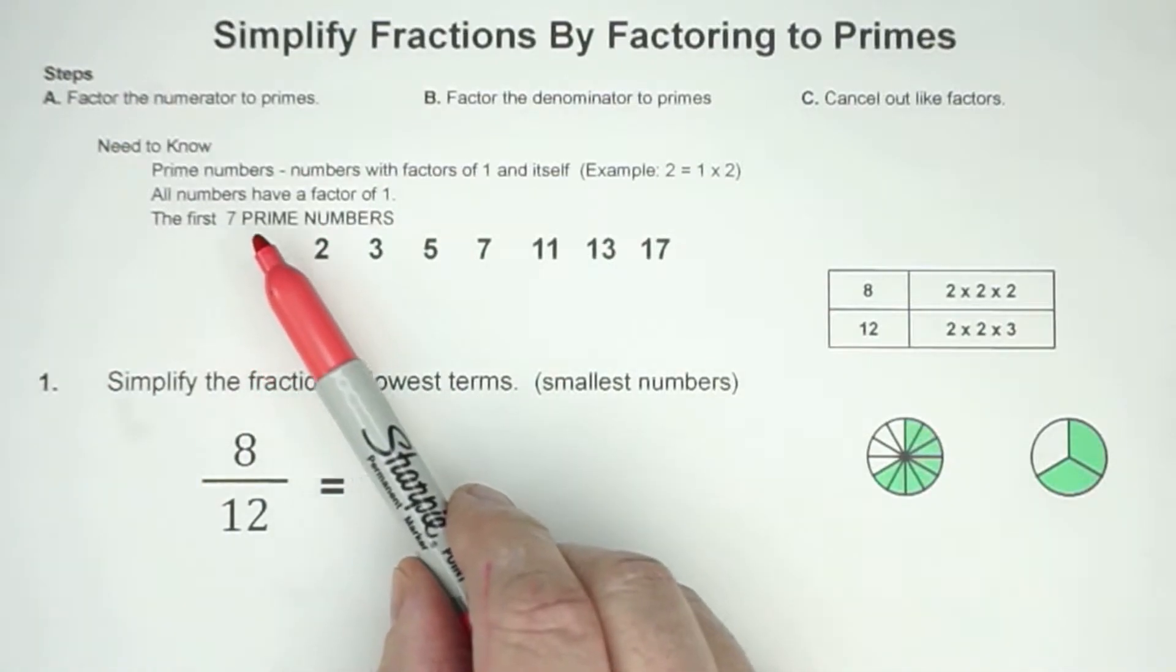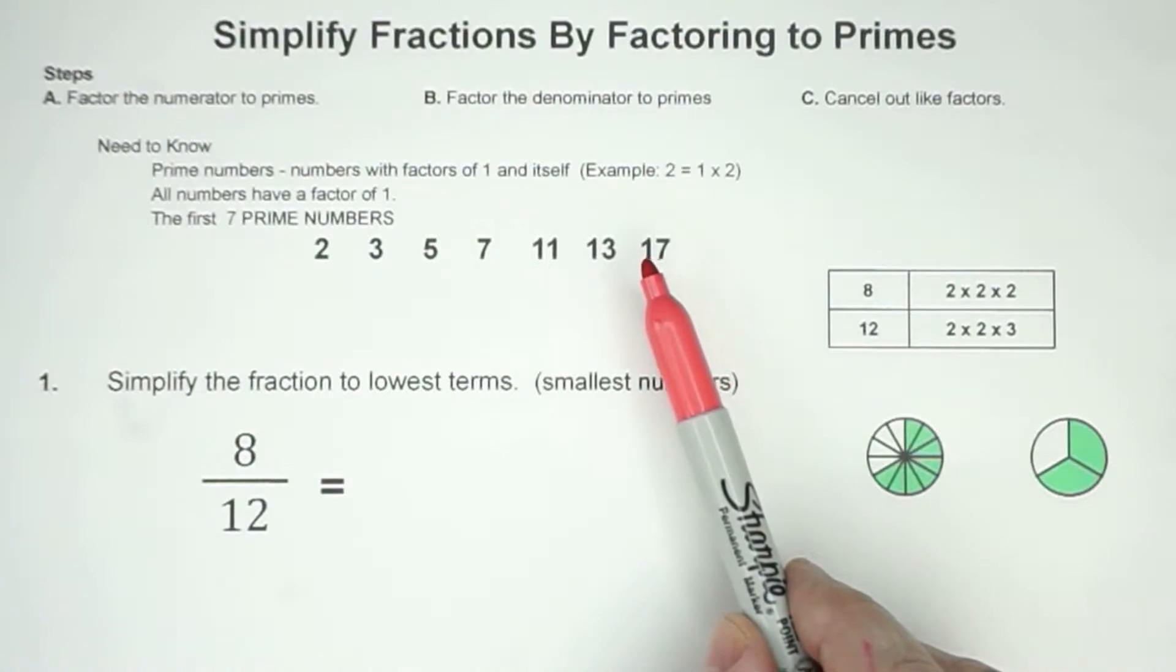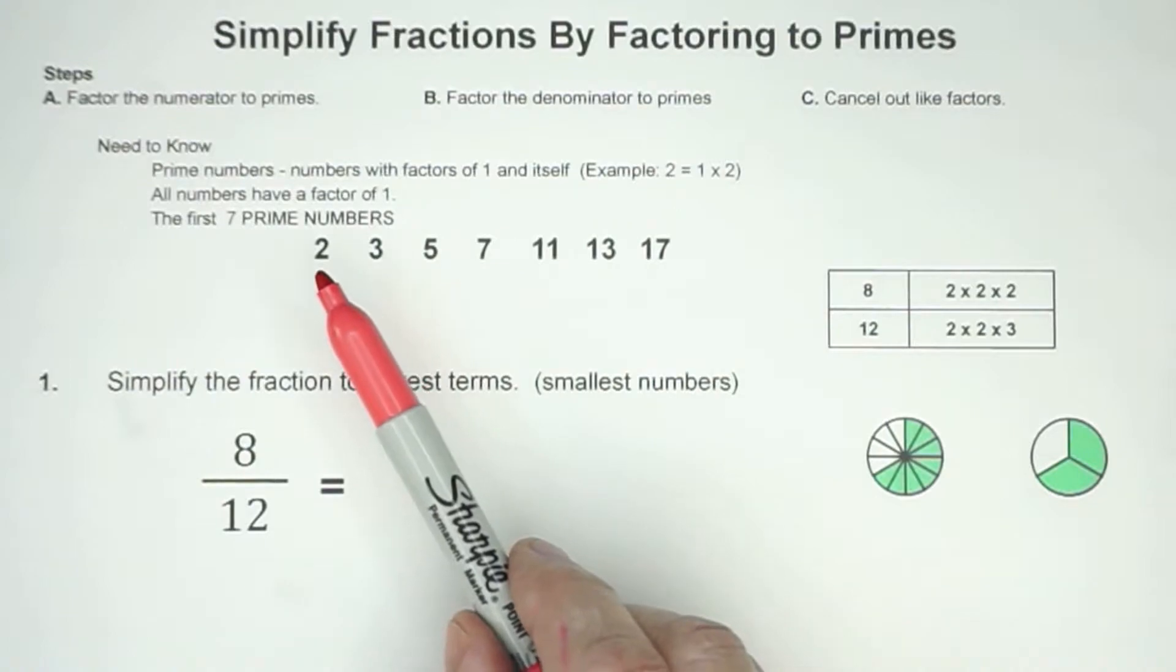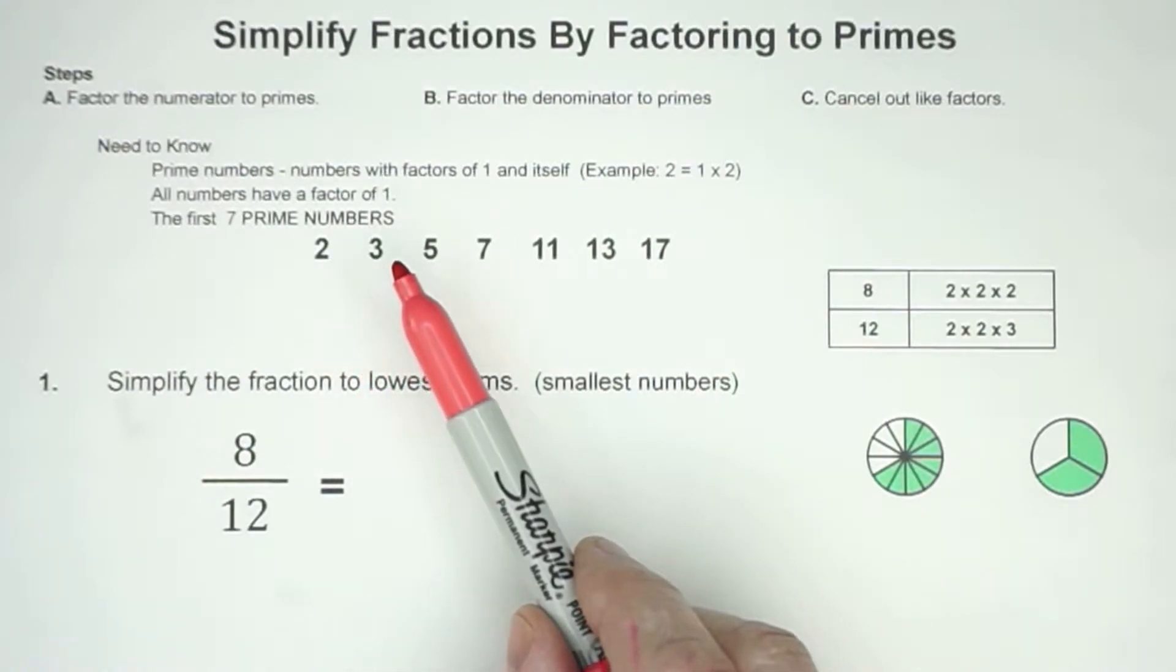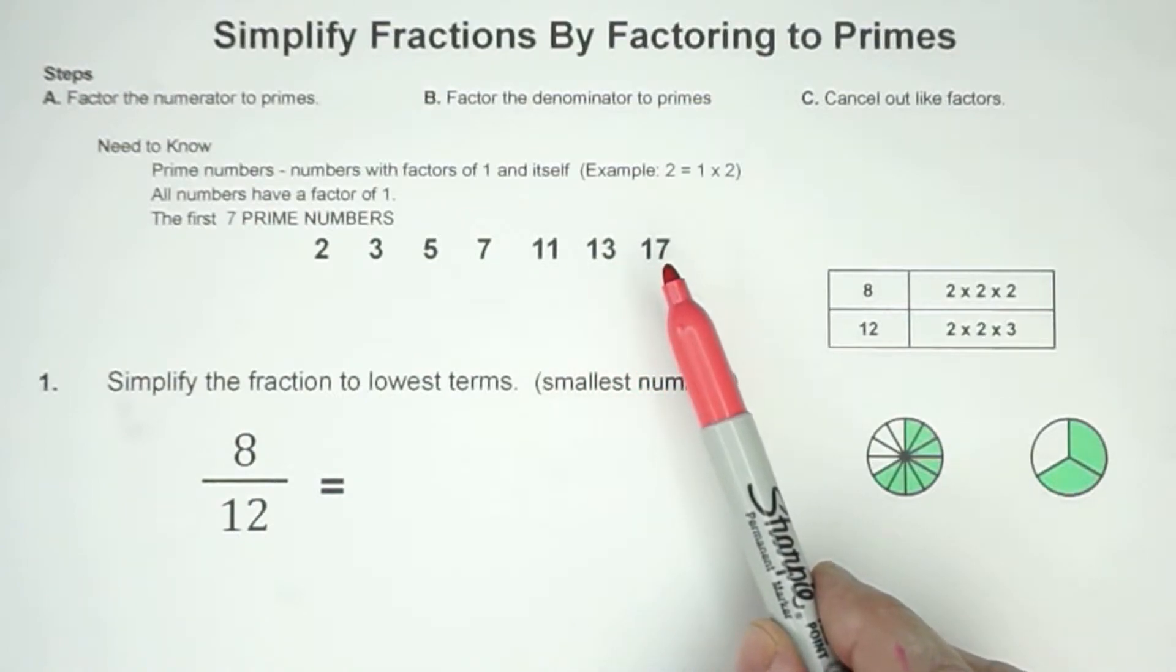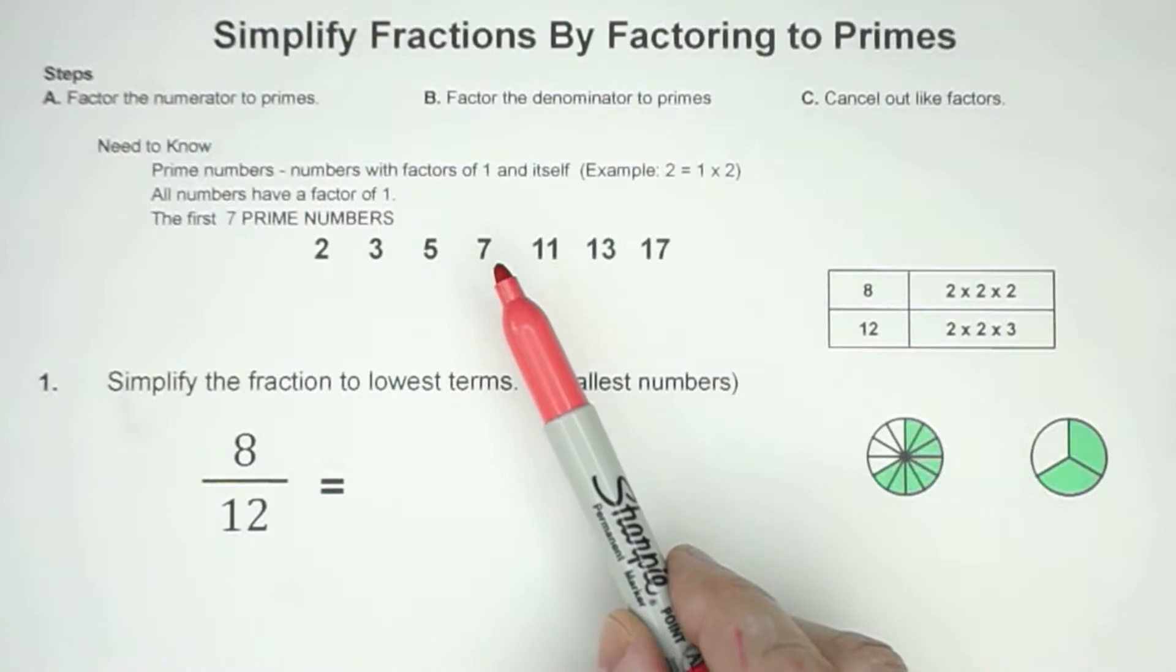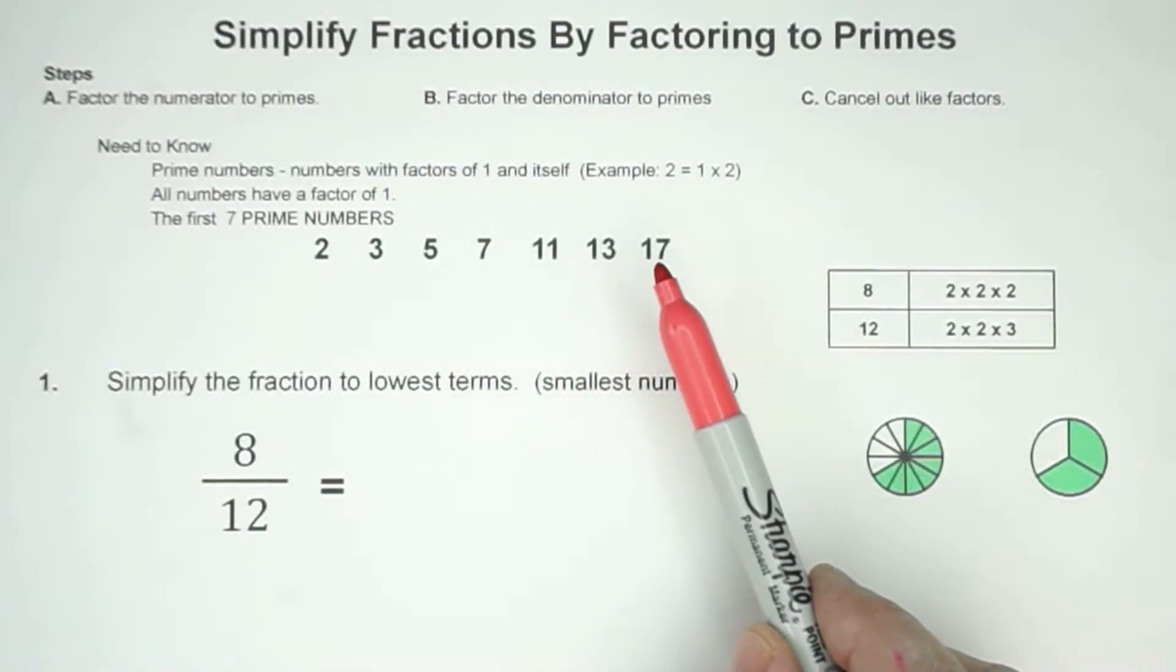We'll get to that on the last problem, and that the first 7 prime numbers you probably want to memorize. It's not that hard to do, and if you like multiplication, this is a great way. Our first 7 primes are 2, 3, 5, 7, 11, 13, and 17.